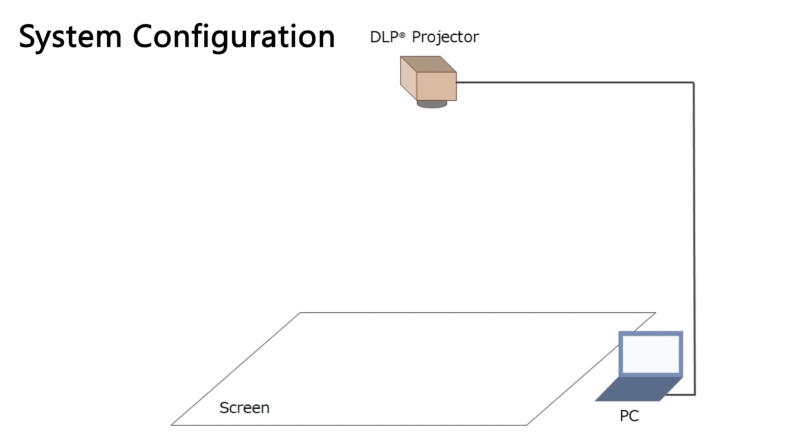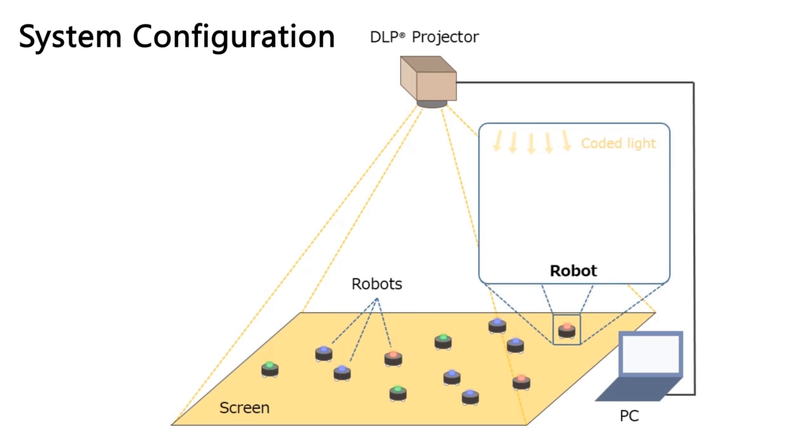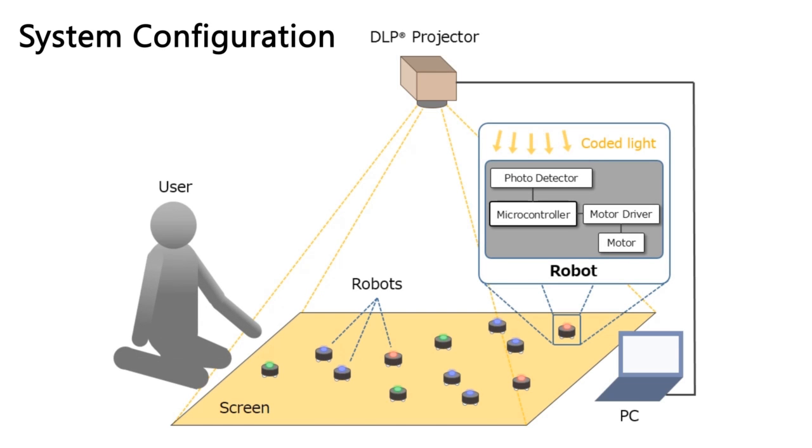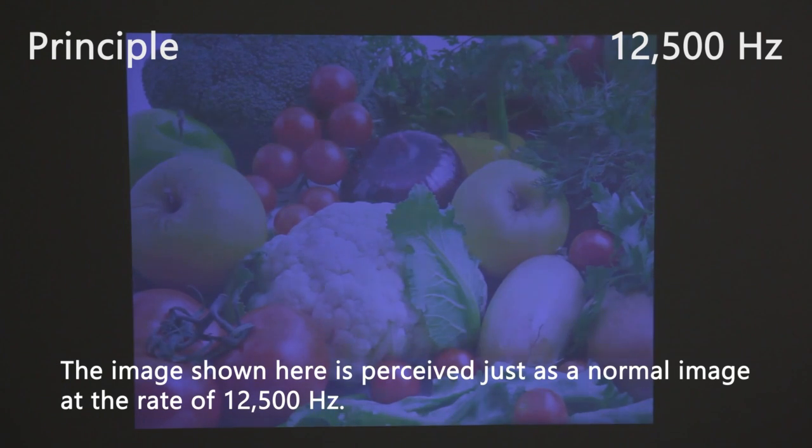The system comprises a PC, a full-color DLP projector, a screen, and robots. The robots receive the projected light and move according to the embedded information in each pixel.